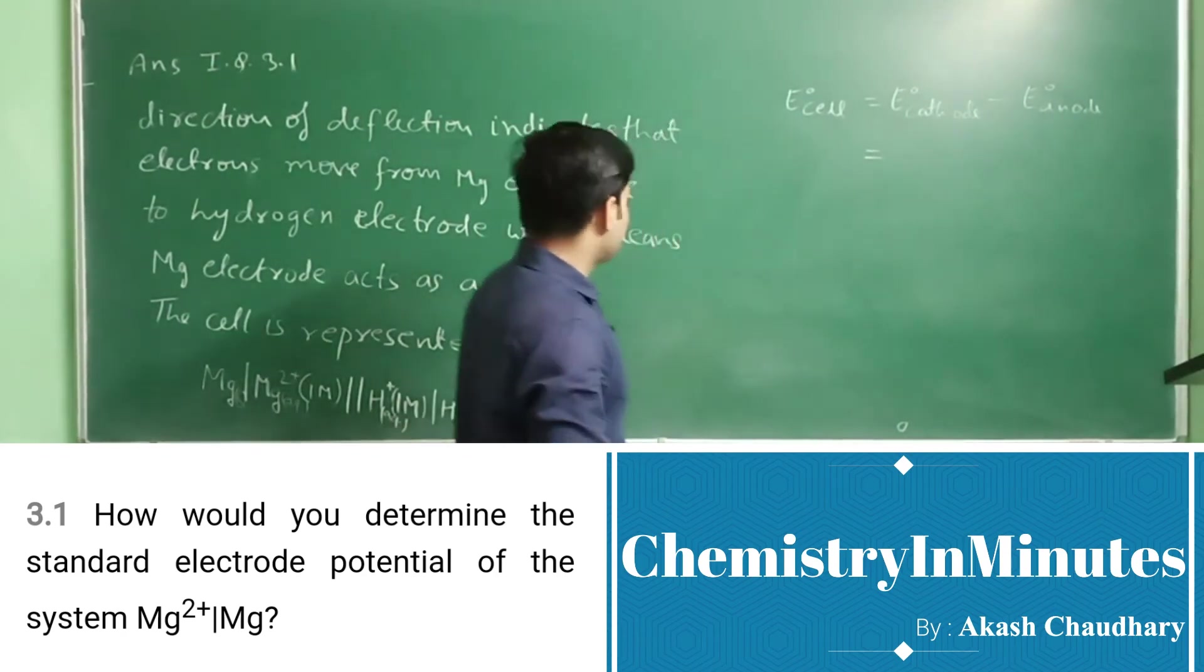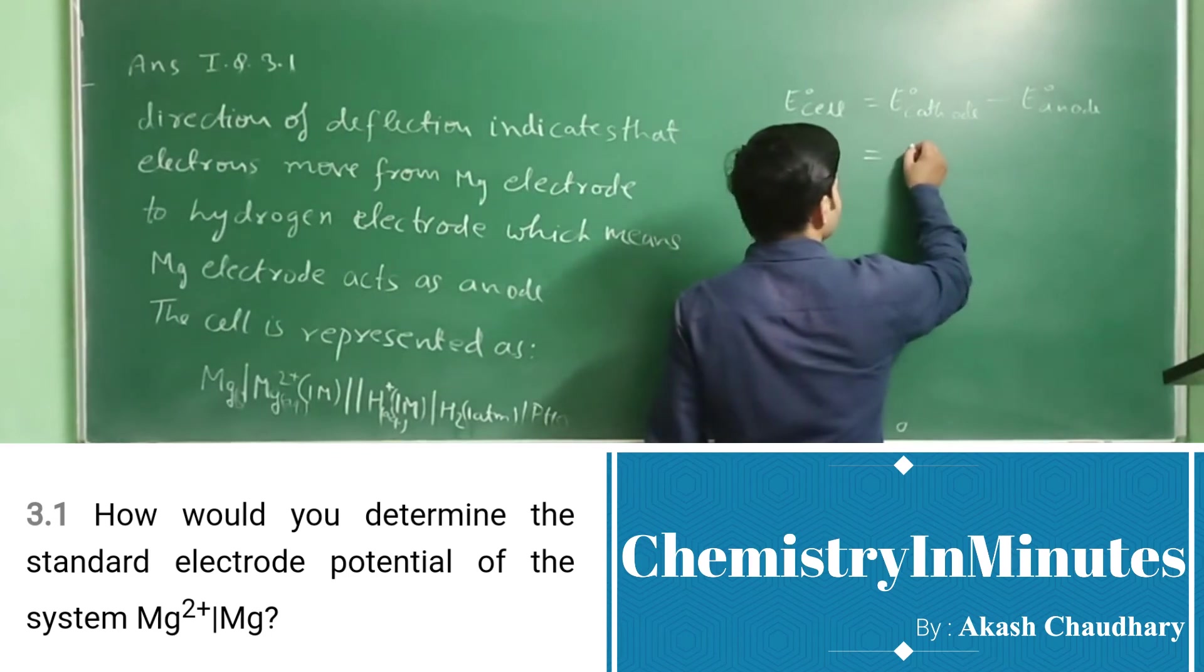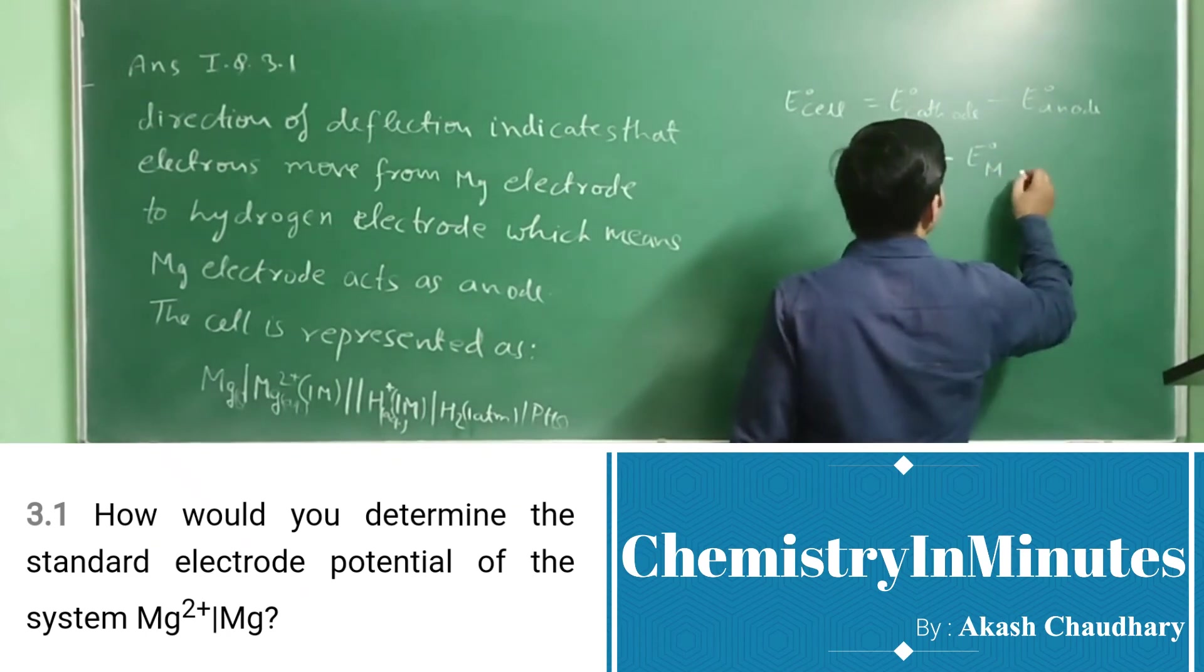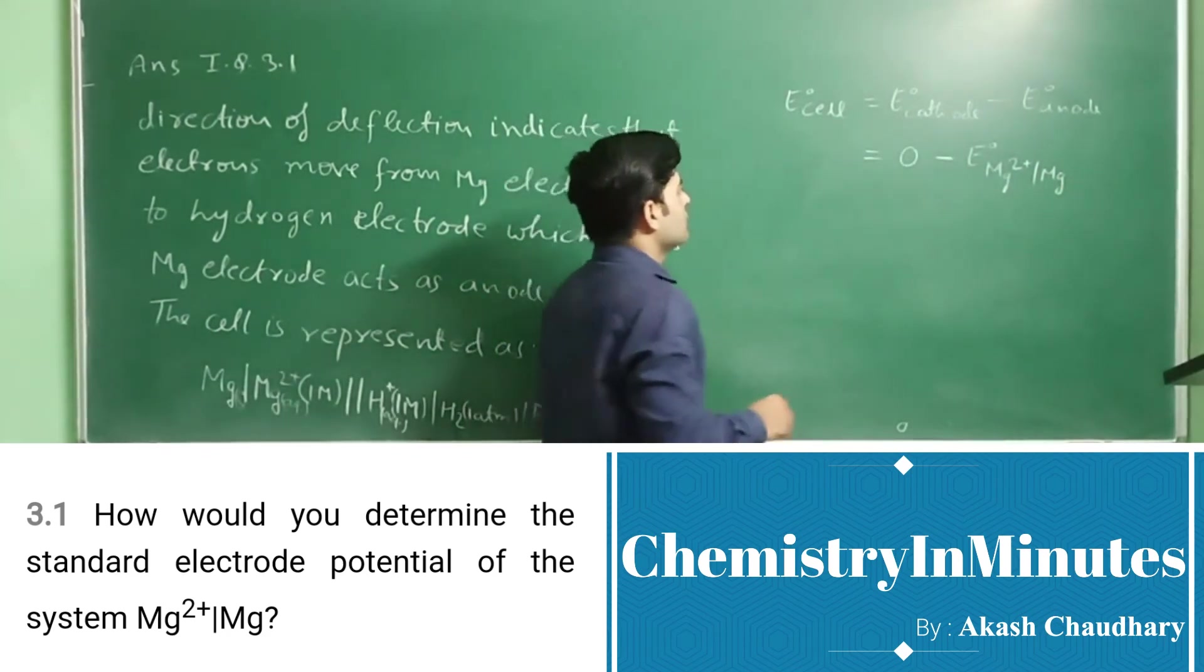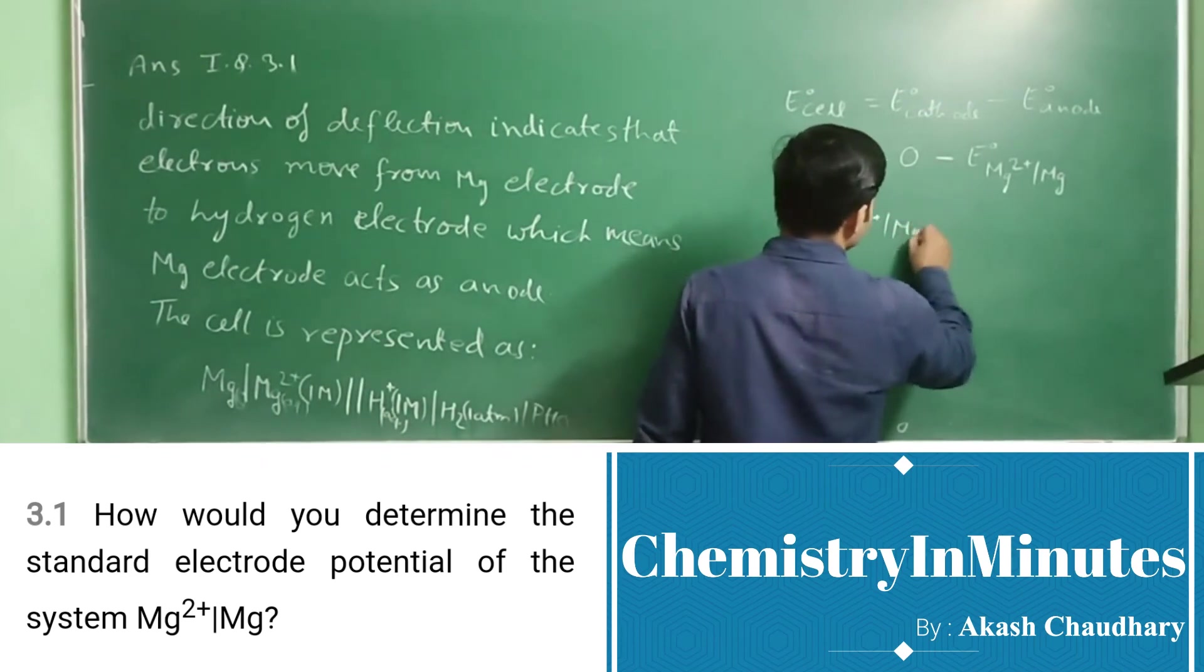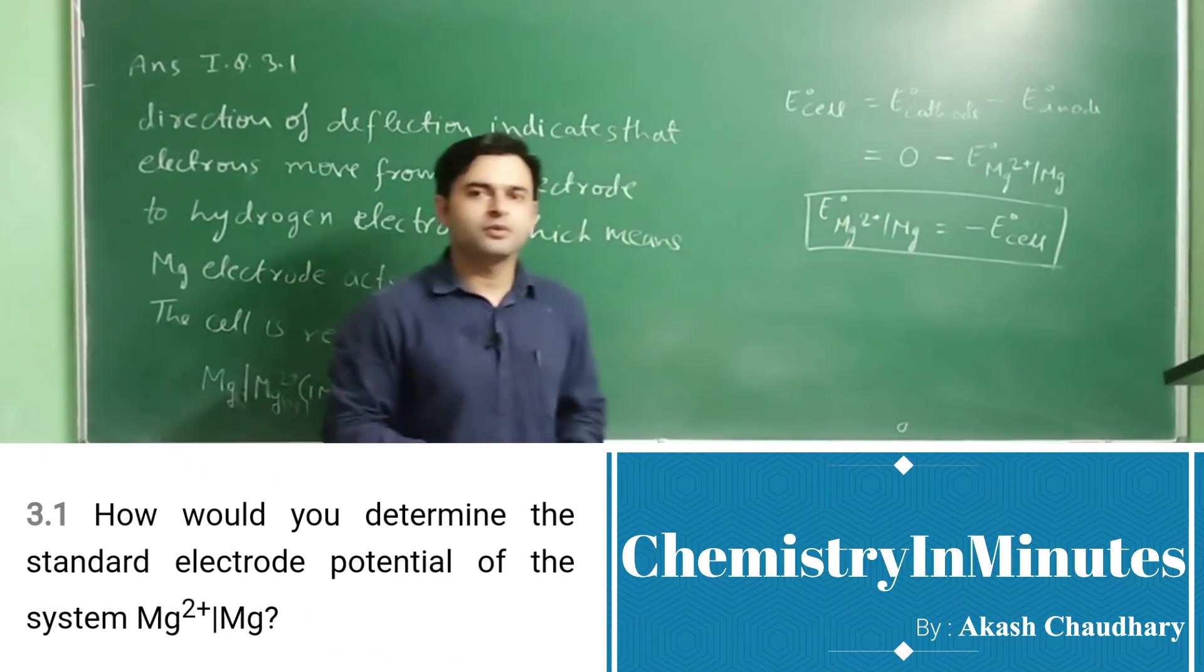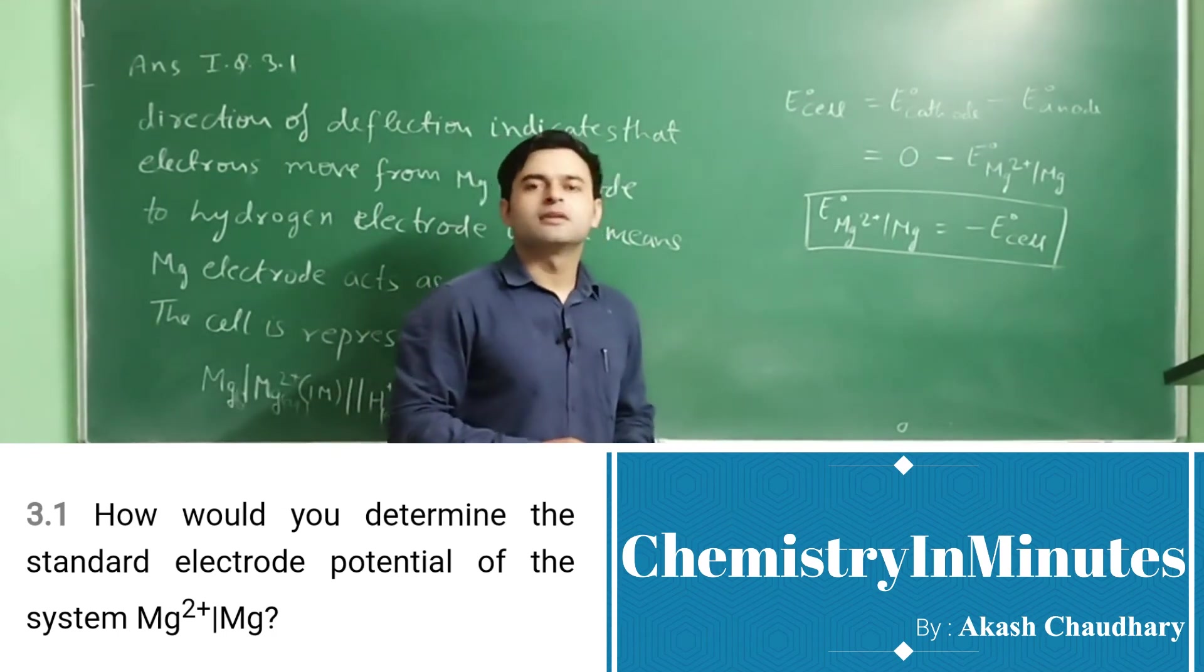E°cathode is standard hydrogen electrode, so E°cathode is 0 because standard reduction potential of hydrogen electrode is 0, minus E°anode. E°anode is Mg²⁺/Mg. From here we can write: E°(Mg²⁺/Mg) = -E°cell. This is how we determine the standard electrode potential of Mg²⁺/Mg system.